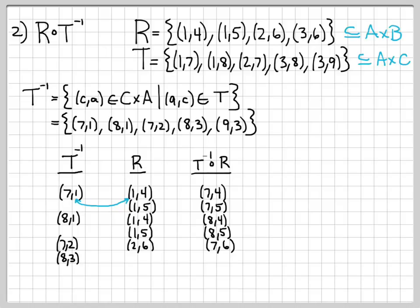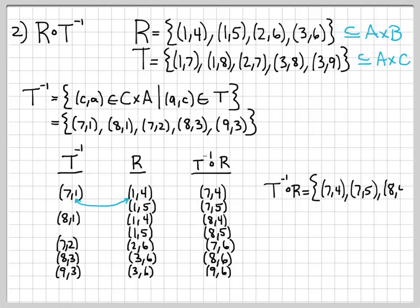Continuing: (8,3) — is there an element in R starting with 3? Yes, (3,6). The interior 3s match, so (8,6) is an element of R∘T⁻¹. Finally, (9,3) — again (3,6) is in R, so (9,6) is an element of R∘T⁻¹. The final set R∘T⁻¹ consists of 7 elements: (7,4), (7,5), (8,4), (8,5), (7,6), (8,6), and (9,6), which is a relation from C to B.